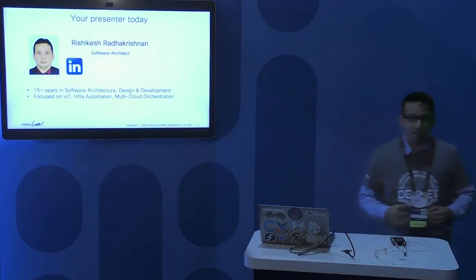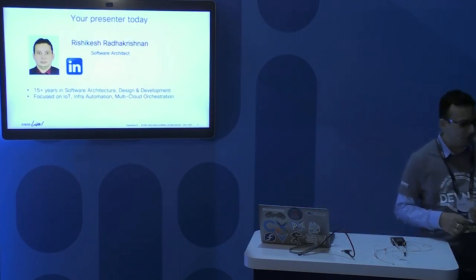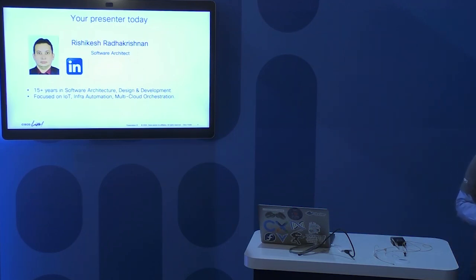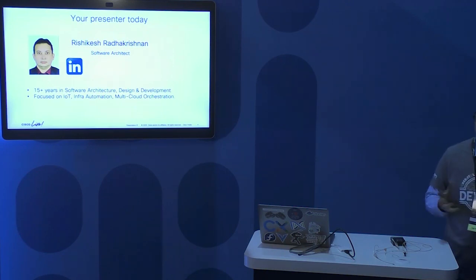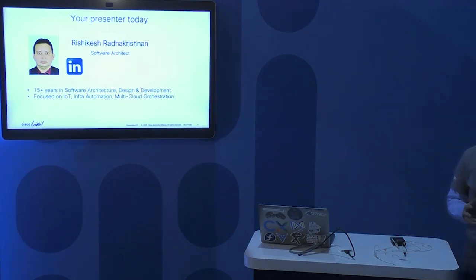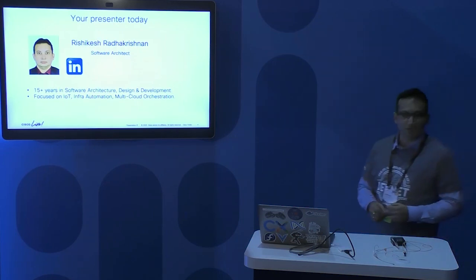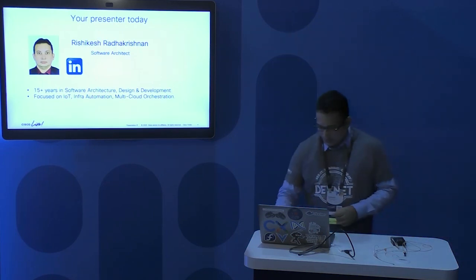Before that, about me — I am Rishikesh Radha Krishnan. I am a software architect with Cisco Custom Experience. I have about 15 plus years in software development, design, and architecture. I'm currently focused on IoT, Infra Automation, and Cloud Management and Orchestration. So let's start.